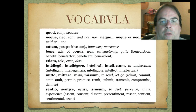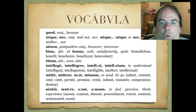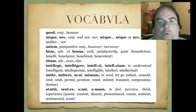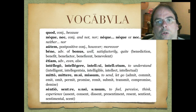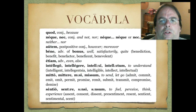Then we have another conjunction, autem. Remember in Latin they have a tendency to put those conjunctions not at the beginning where we would put them, because autem means however or moreover. They would put it right after the first word — so post-positive, that's what that means: it doesn't come first, it comes second. Then we have the adverb bene — it's the adverb form of bonus, which means good. It's like the English issue of whether to say good or well. If it's an adverb, we should translate it as well, satisfactorily, or quite. Then the adverb etiam, which means even or also.